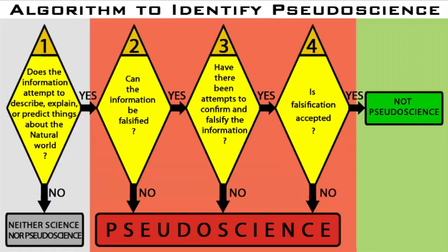The fourth and final question is simple. After attempting to falsify or disprove the information, is falsification accepted by the source of the information? That is to say, is there acknowledgment that the information was wrong after falsification?